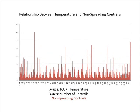This graph was created to study the relationship between temperature and non-spreading contrails. The x-axis is the current temperature and the y-axis is the number of contrails. The red represents the non-spreading contrails. Although both the short-lived and spreading contrails showed increasing numbers in the 16 to 19 degrees Celsius range, the non-spreading contrails did not — they occur randomly across every temperature region, and we could not find a pattern in their formation.